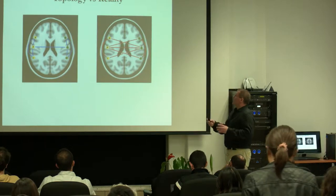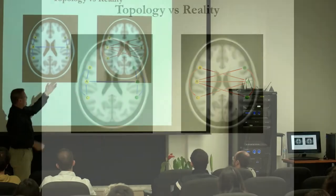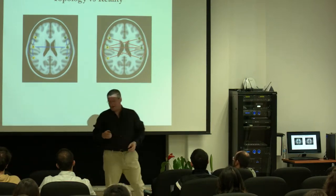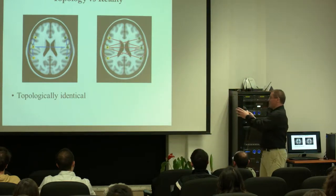Consider these two networks. They are very different: the red network has many more long-distance connections than the blue network. Now consider how they differ in terms of manipulation. If I take the two A nodes of the blue network and flip them, I have the red network. So in terms of graph theory, these are identical. Graph theoretic mechanisms will never capture this huge difference in organization.